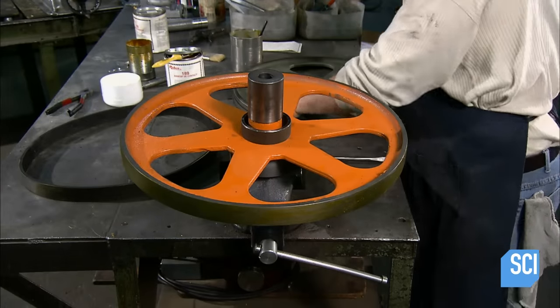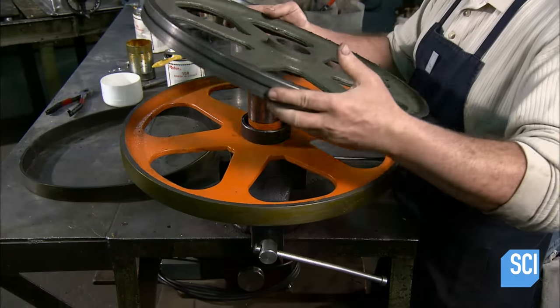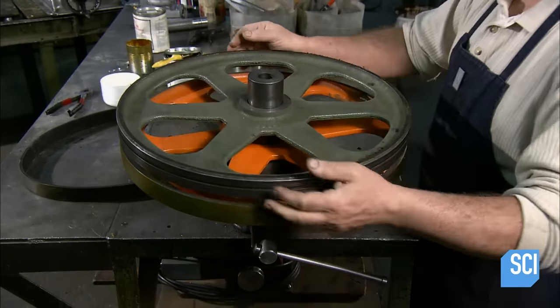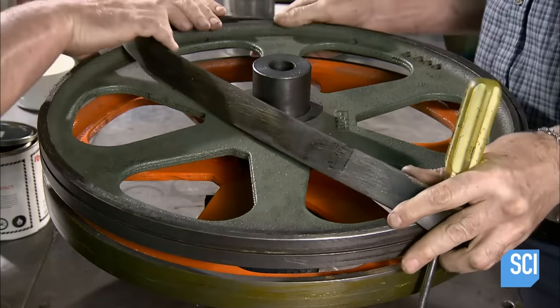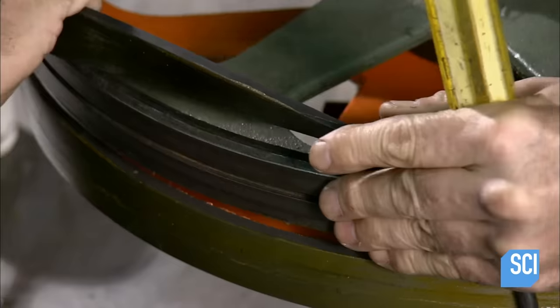Those cast iron wheels, meanwhile, need a rubber edge to ensure the blade moves smoothly and without slipping. Workers position a guide over the first wheel, then slip a rubber band onto the guide.